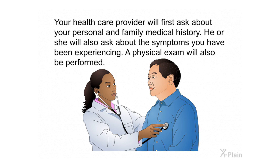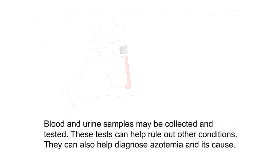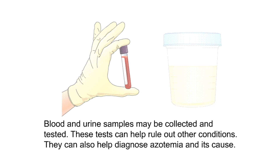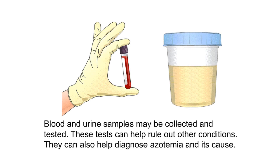Diagnosis. Your health care provider will first ask about your personal and family medical history, as well as the symptoms you have been experiencing. A physical exam will also be performed. Blood and urine samples may be collected and tested to help rule out other conditions and to diagnose azotemia and its cause.